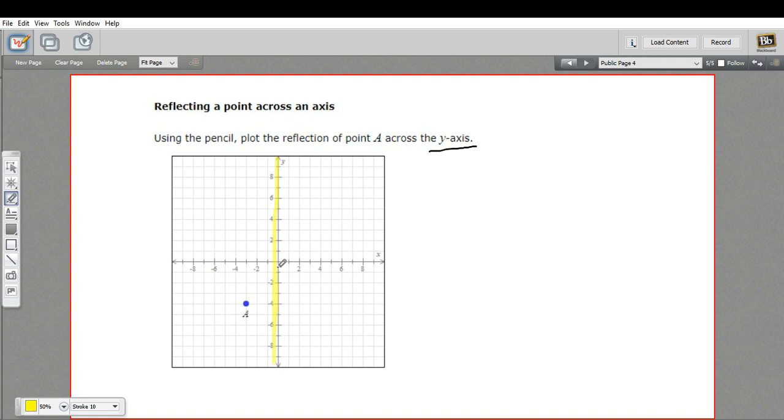I'm going to highlight this because you should think of this as the surface of your mirror. Point A is going to look into that mirror and see an image of itself. The property of a reflection is that the image is just as far away from the line of reflection as the point is from the mirror.